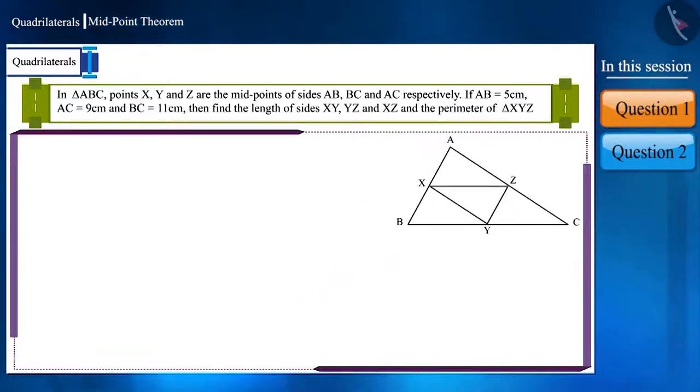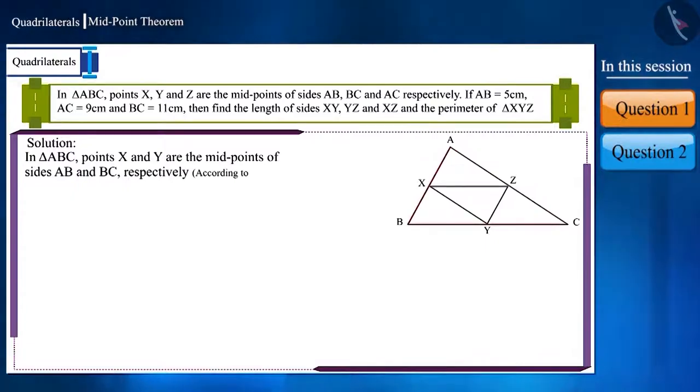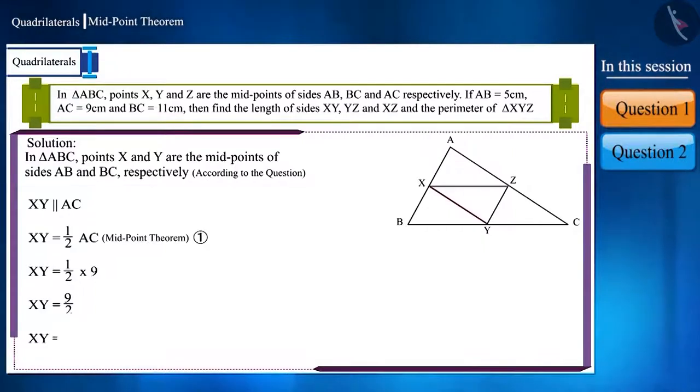Friends, we are given that in triangle ABC, points X and Y are the midpoints of sides AB and BC respectively. If we use the midpoint theorem here, then we can say that the line segment XY is parallel to side AC and equal to half its length. We are given the measurement of AC as 9 cm. We can find the measurement of XY by substituting the value of AC. We get the value of XY as 4.5 cm.